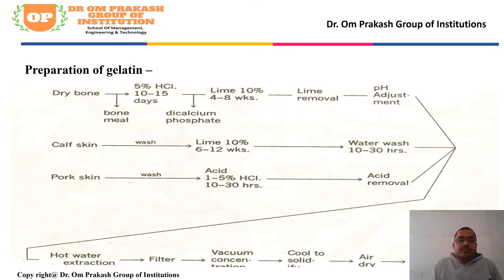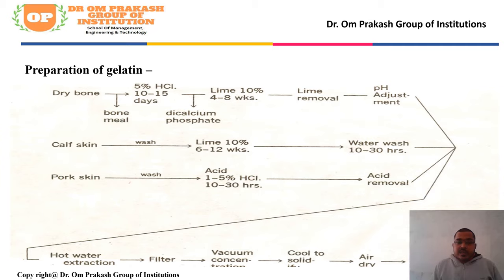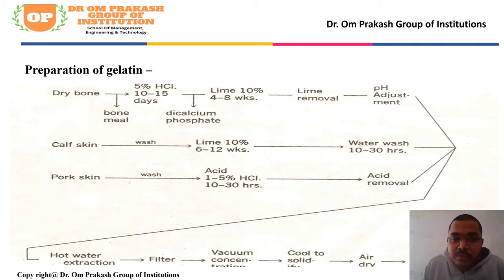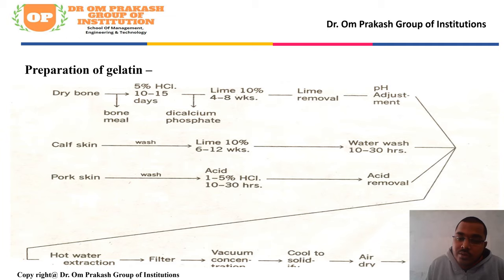Now, the preparation of gelatin. First, for dry bone: take the dry bone, grind it to bone meal. Next, keep it in 5% HCl for 10–15 days. Then add di-calcium phosphate. Then keep in 10% lime water for 4–8 weeks. Then wash, add water, make a liquid, and finally dry it.